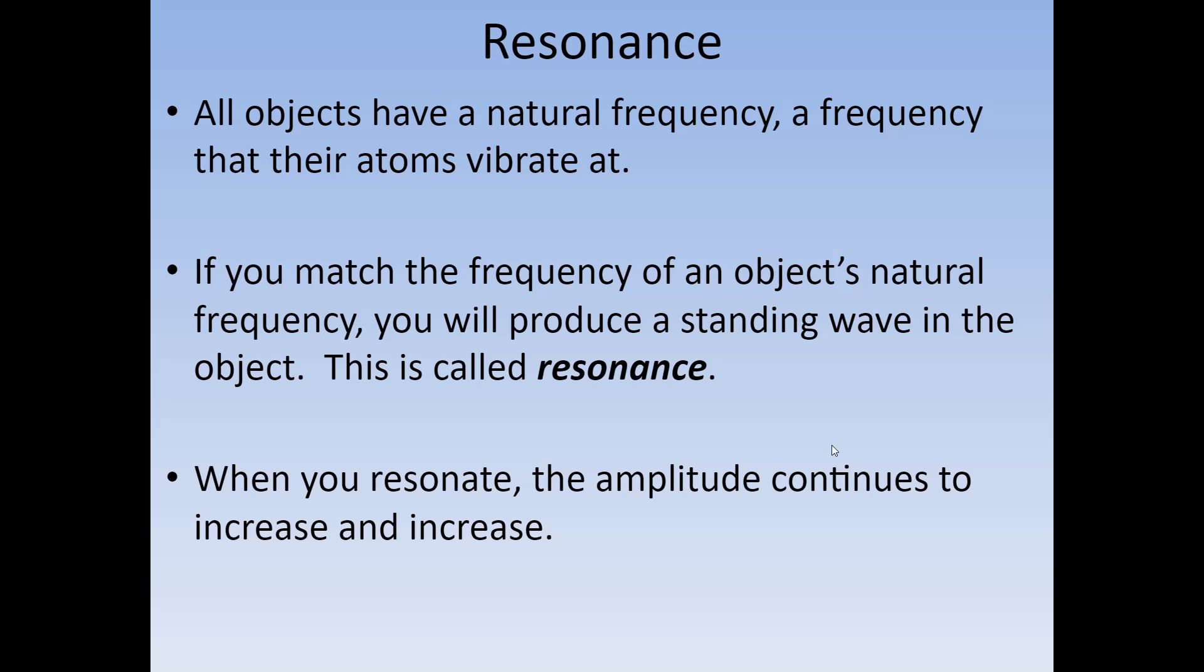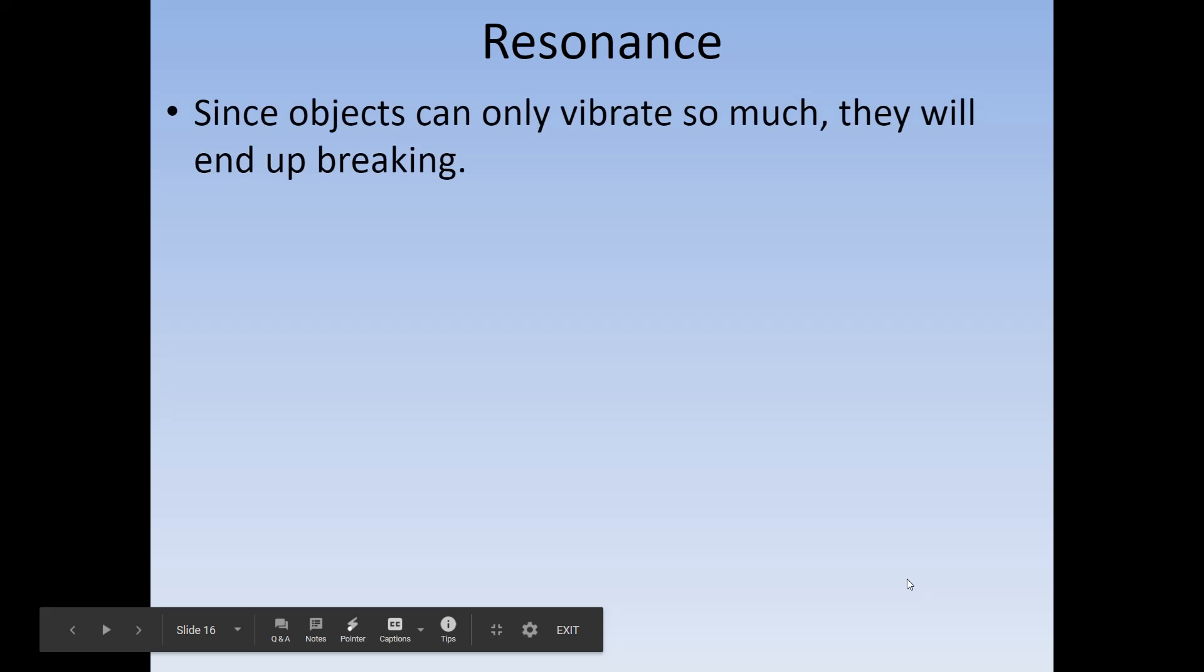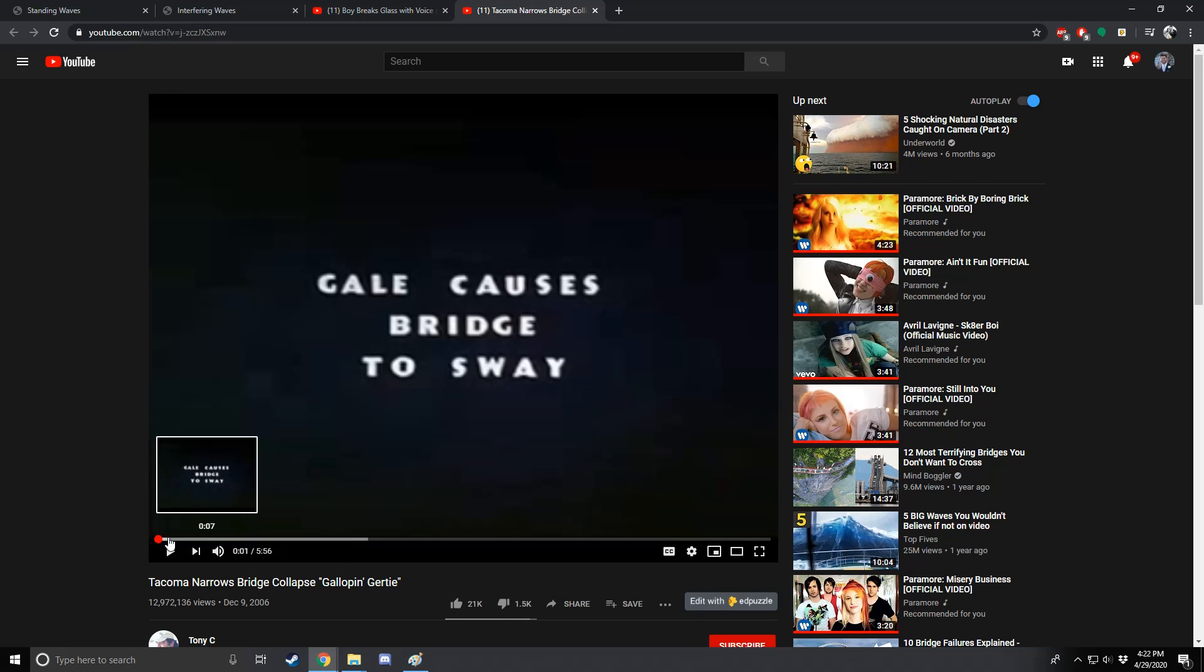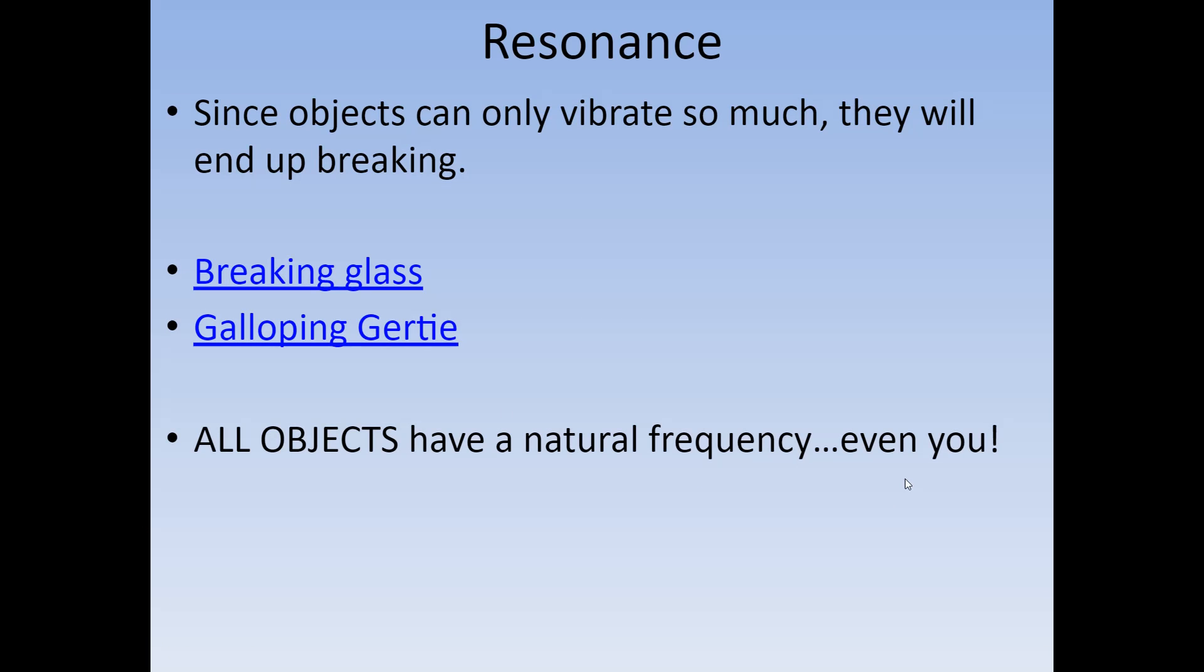So as you resonate, you end up increasing the amplitude more and more until it becomes bigger and bigger. Now of course, there's a limit to how much everything can vibrate. After a certain point, what's going to happen if you keep increasing the amplitude and increasing the size of the wave in a naturally occurring object? Well, it's going to end up breaking. There's two very common examples. I recommend looking at these. I'm not going to play the videos right now. There's this one, it does have a funny reaction from him, but he does the typical trying to break a piece of glass with his voice. And then this is a very famous and dangerous example of resonance called Galloping Gertie or Tacoma Narrows Bridge. Basically same thing. The wind blew, resonated with the natural frequency and caused the bridge to vibrate. So both of these are examples of resonance and that objects will end up breaking.